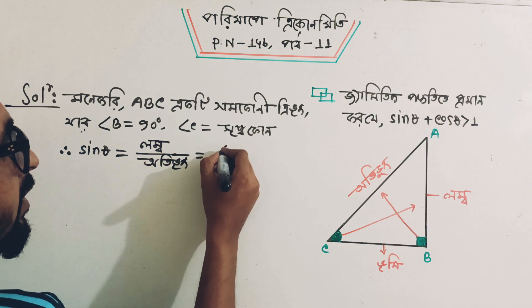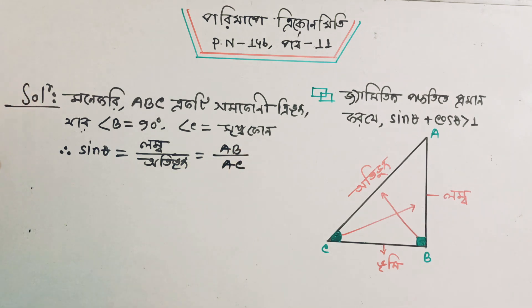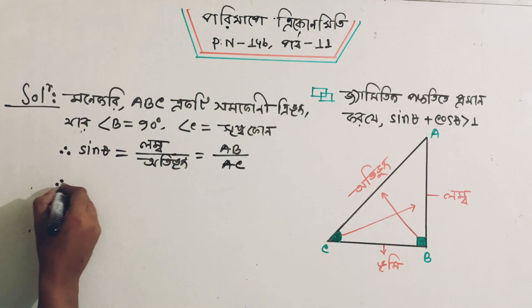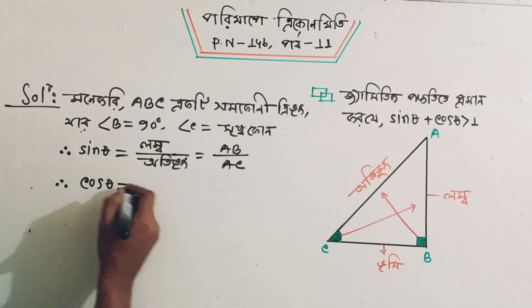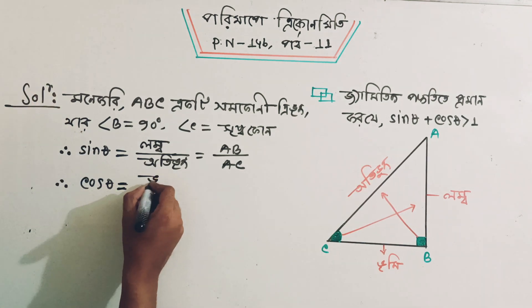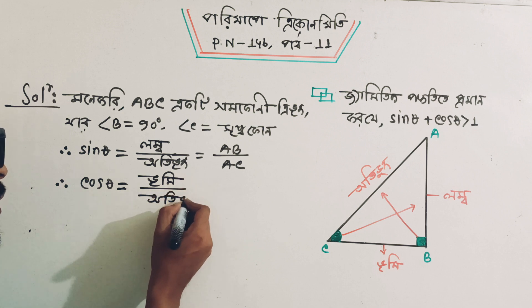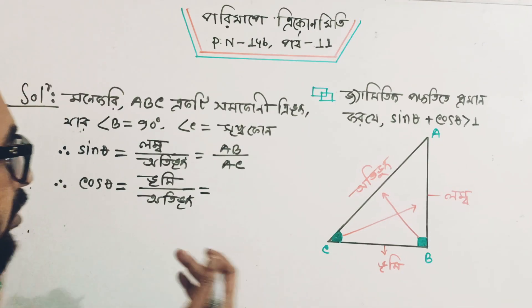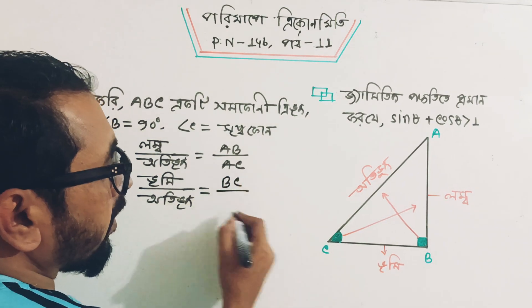Lumber — that means Lumber and otivus, that means AC. Now let's see how the cos theta is. Cos theta means Bhoomi divided otivus. So cost theta means that Bhoomi divided otivus. Bhoomi is BC, otivus is the hypotenuse.